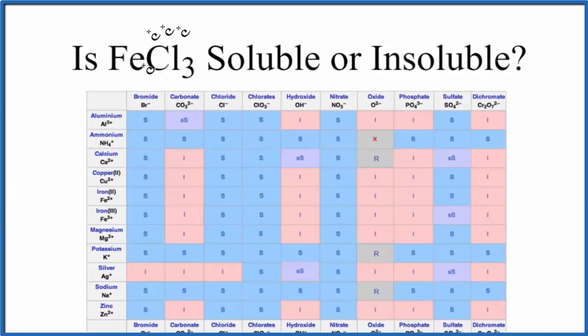Since we have three chloride ions, this gives a minus three charge overall. This means the iron must have a 3+ ionic charge. That's why it's iron(III).